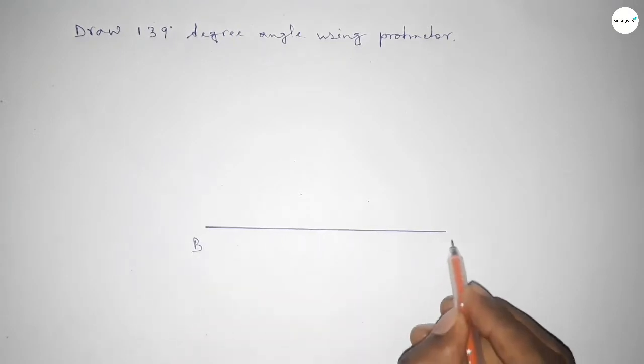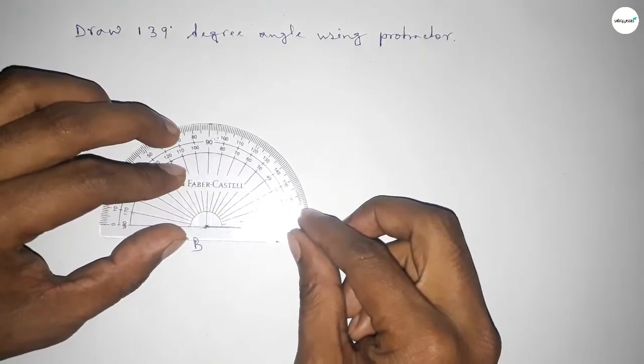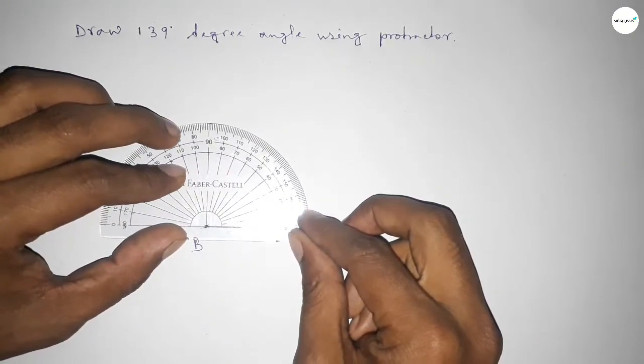Next, taking here point B and here C. Now putting the protractor on point B perfectly, then counting the angles.